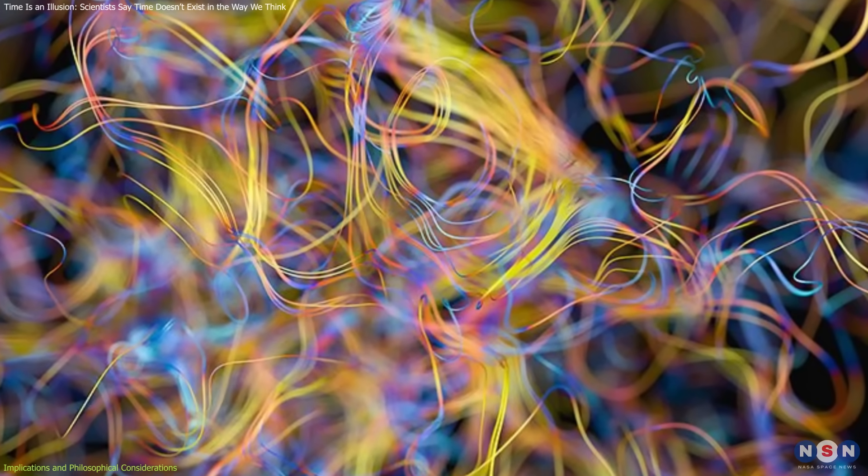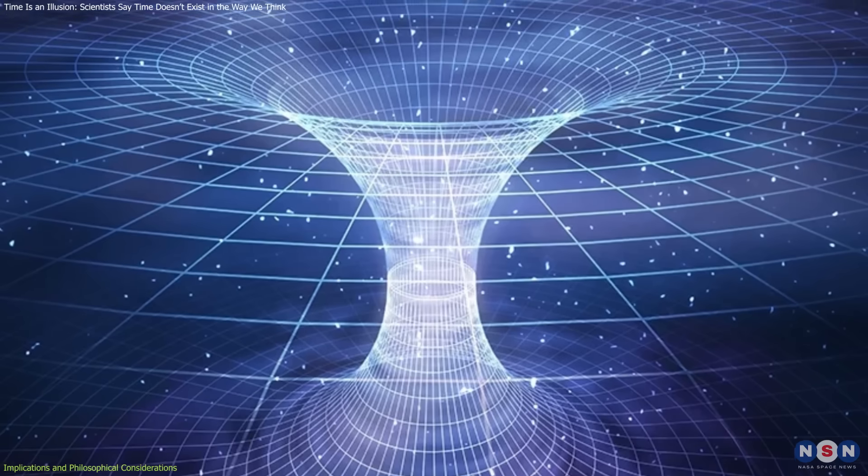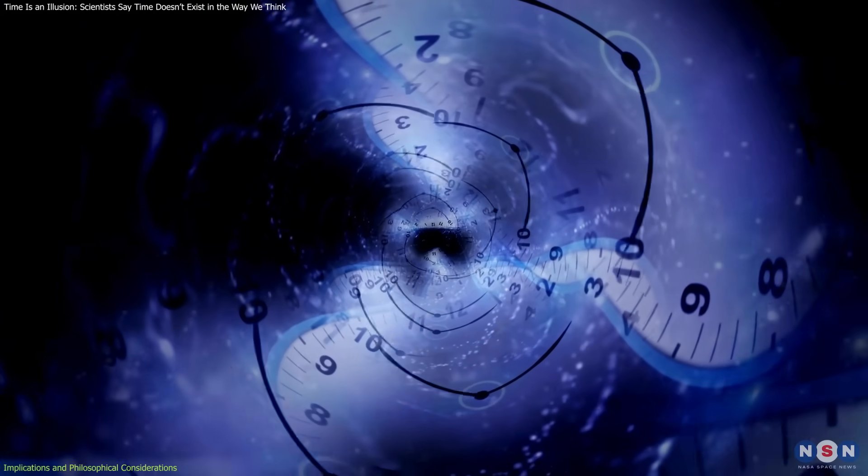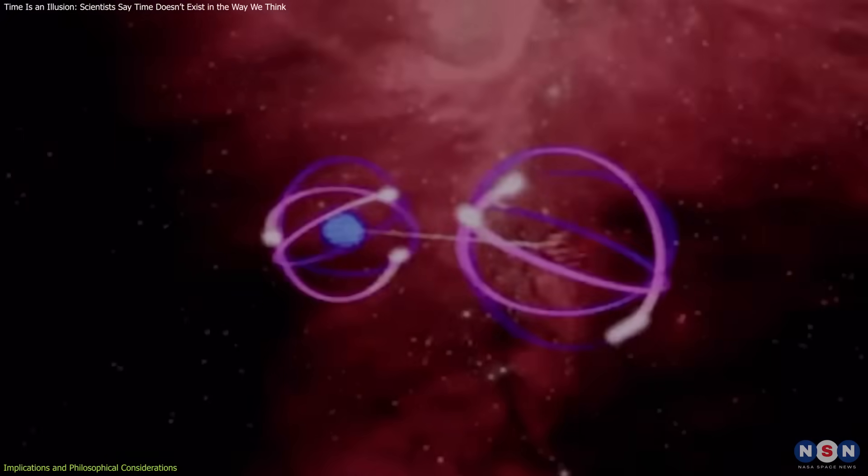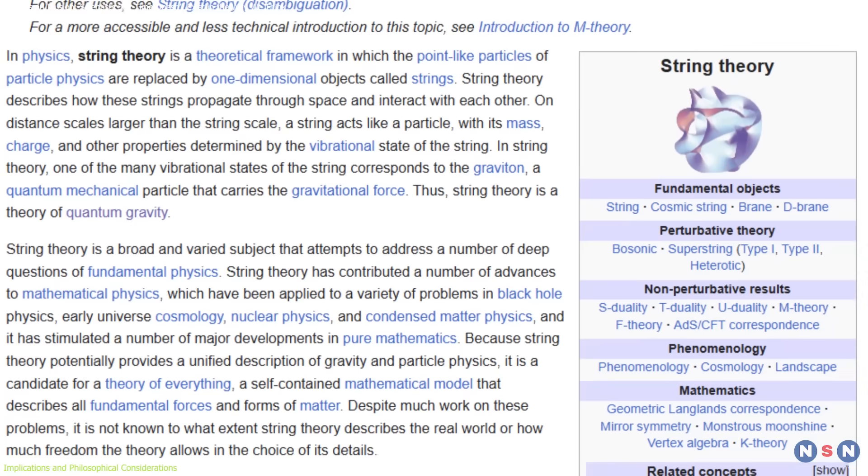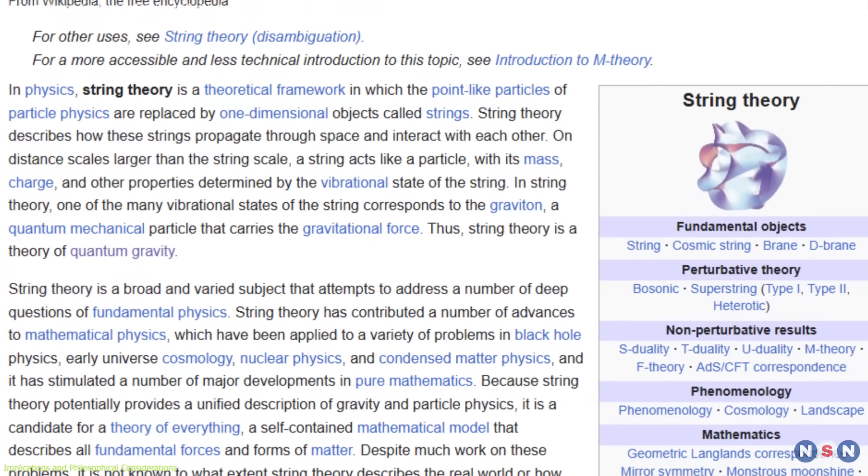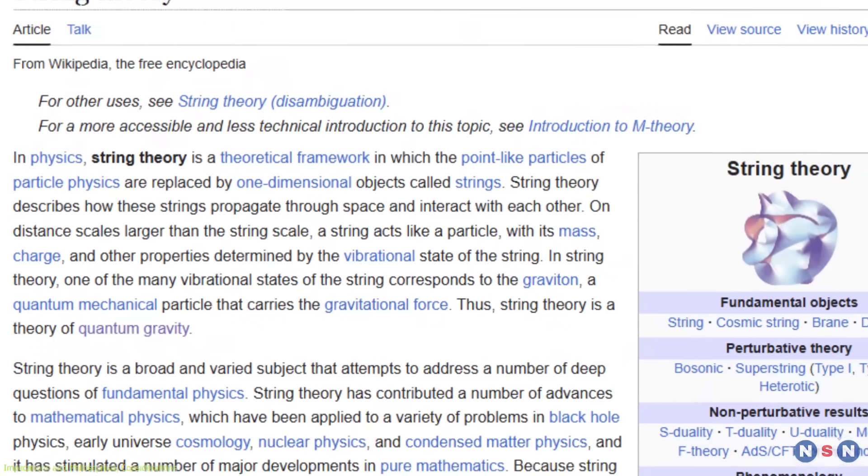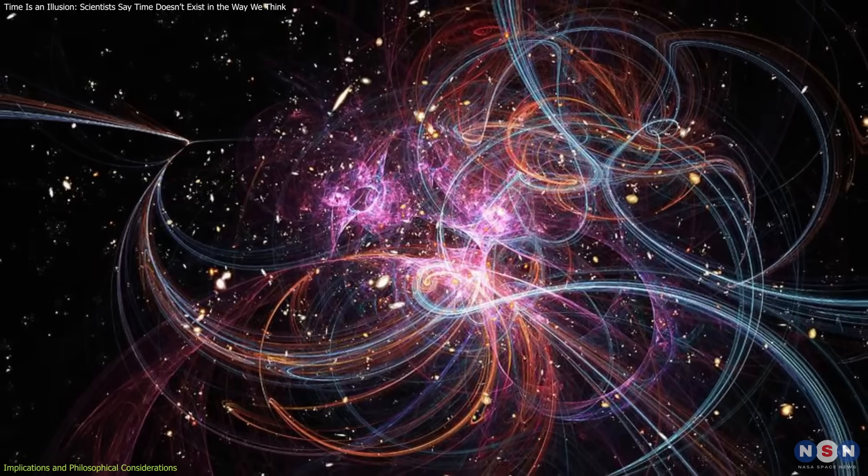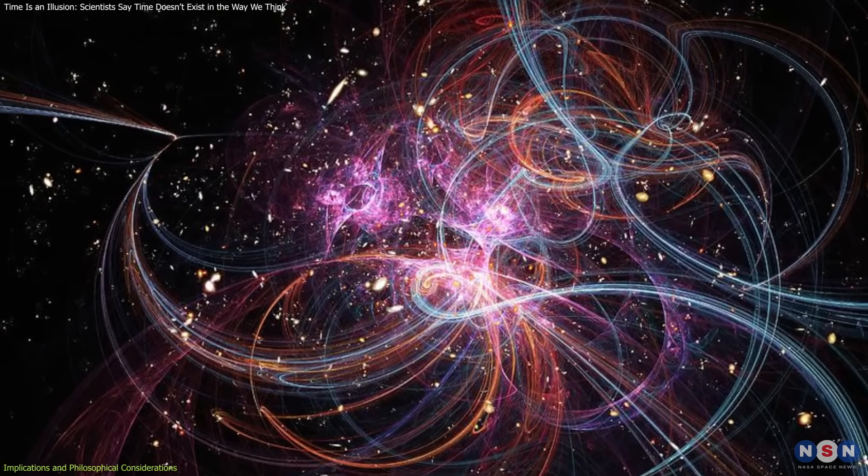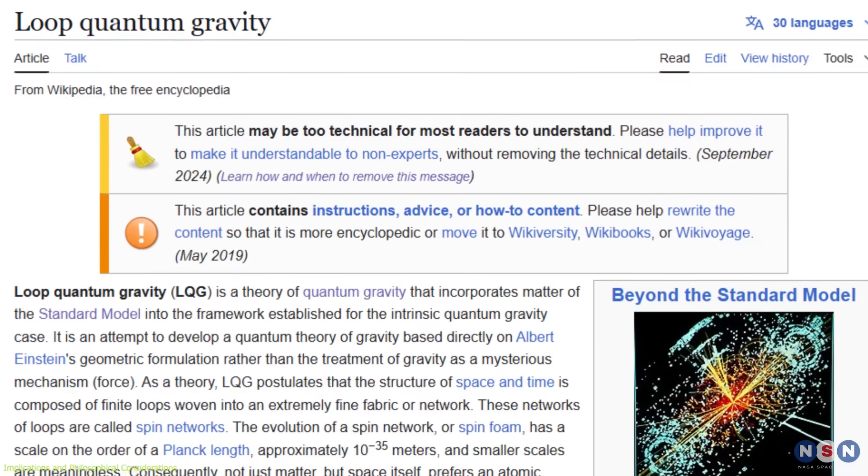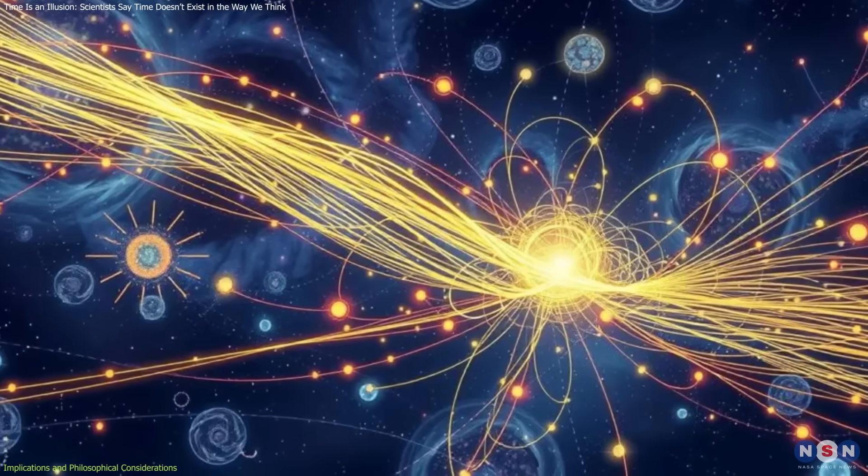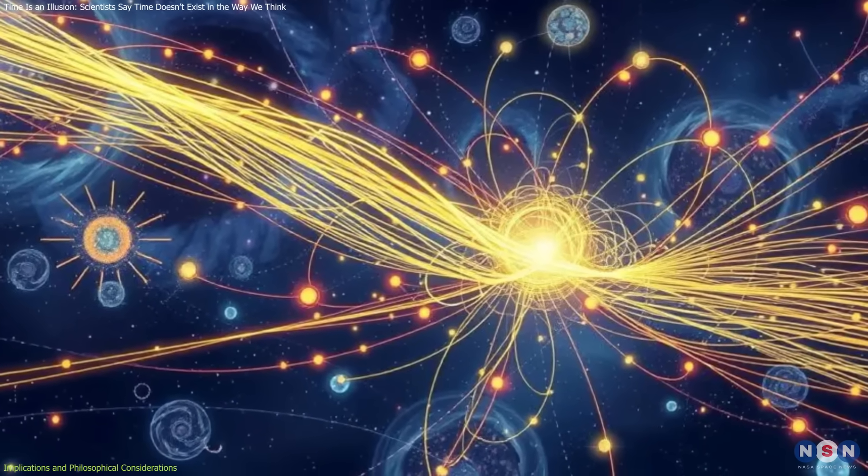Emerging theories like string theory and loop quantum gravity suggest that space-time, and by extension time itself, may not be fundamental, but arise from deeper quantum structures. For example, string theory proposes that time may emerge from the vibrational patterns of fundamental strings, blending seamlessly with the fabric of space-time. Loop quantum gravity suggests space-time is composed of discrete chunks, with time arising from their interactions.